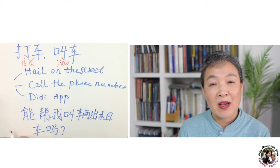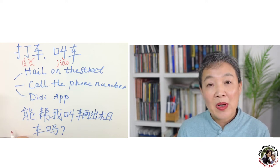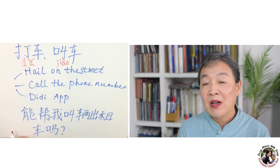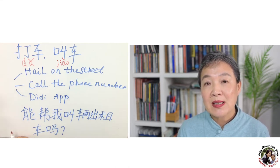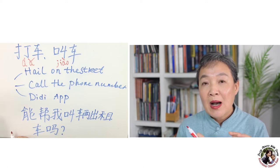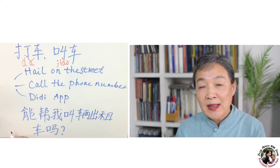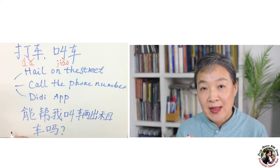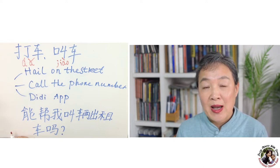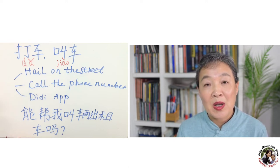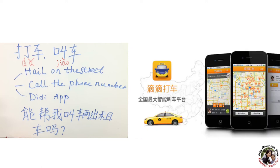There are three ways to call a taxi. One is the traditional way: stand on the street and hail a taxi. Another way is to make a phone call — most cities print a free call number on the taxi body. The third way, which is now the most popular, is to download the DiDi app.